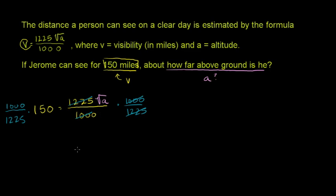And I always like to have the variable I'm solving for on the left hand side, so let's put it there. So we get the square root of a is equal to 1000 times 150, times 150, all of that over 1225.